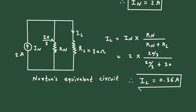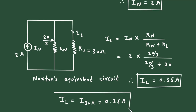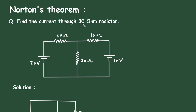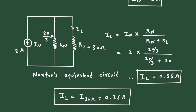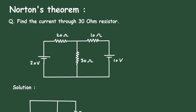So IL is equal to 0.6 ampere. This is how we can find the value of current by using Norton's theorem. Check the link in the comment section and install the app for free. Thanks for watching.